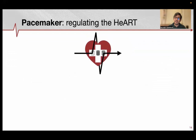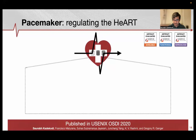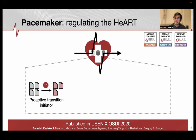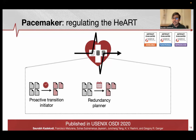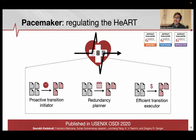To solve that, we devised Pacemaker, which efficiently regulates HART. Pacemaker is published in OSDI 2020 and consists of three main components: a proactive transition initiator that reduces the urgency of transitions, a redundancy planner that chooses the right schemes to transition to, and an efficient transition executor that reduces the IO cost associated with transitions.